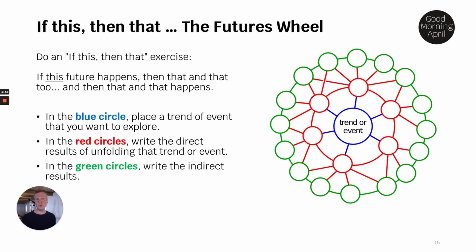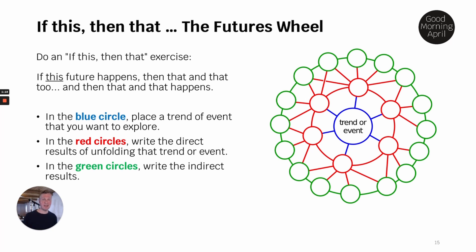We can also play a game called the futures wheel: if this happens, then that happens. We look at the causality — the ripple effect — of trends. In the blue circle we put a specific trend or event. In the red circles around it, we try to understand the direct results of that trend when it unfolds. Then in the third ring — the green circles — we write the indirect results. We want to investigate the ripple effects of something happening, for example the internet, or when the future of food really kicks in.